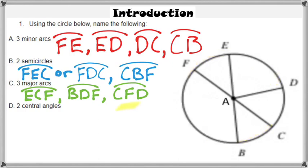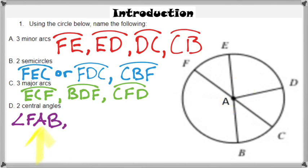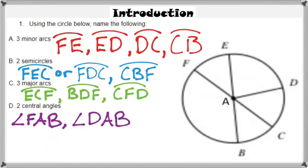A major arc has to be named with three letters, and a minor arc has to be named with two letters. Lastly, a central angle — a very basic idea. You simply take the center of the circle as the vertex of your angle. In this case, the center of the circle is A, so angle FAB is a central angle because the vertex A is the center of the circle. Another example of a central angle could be angle DAB.